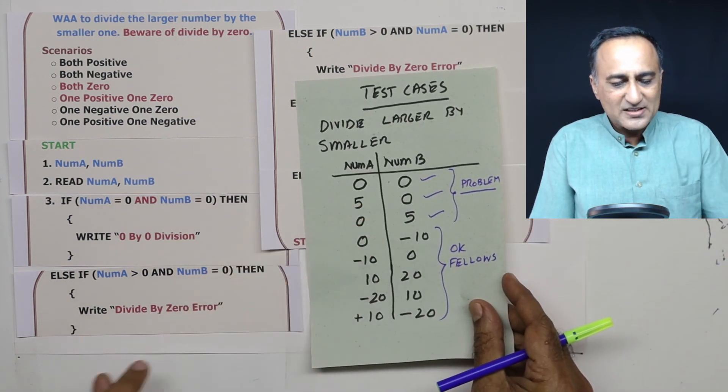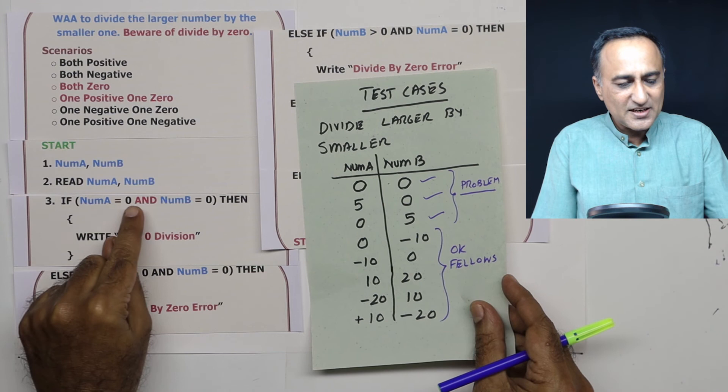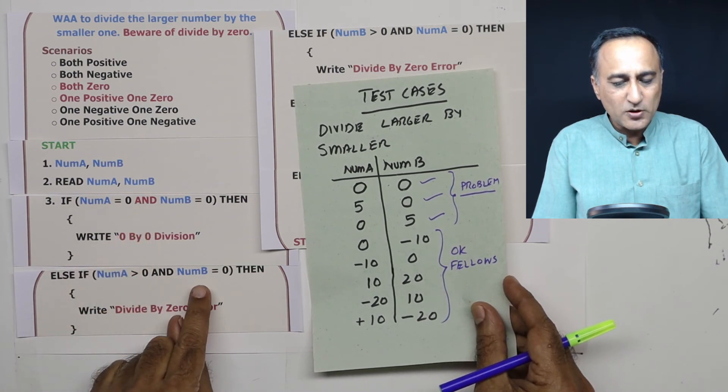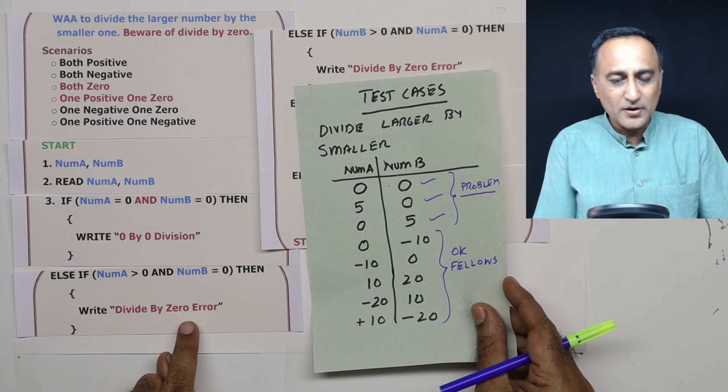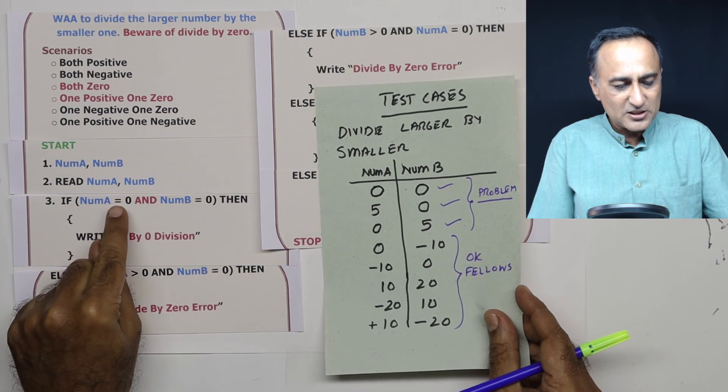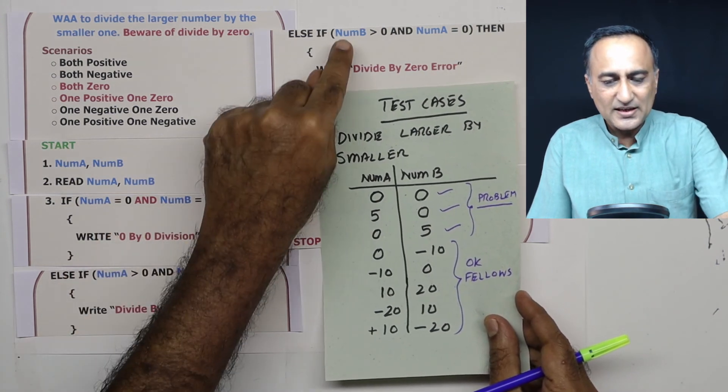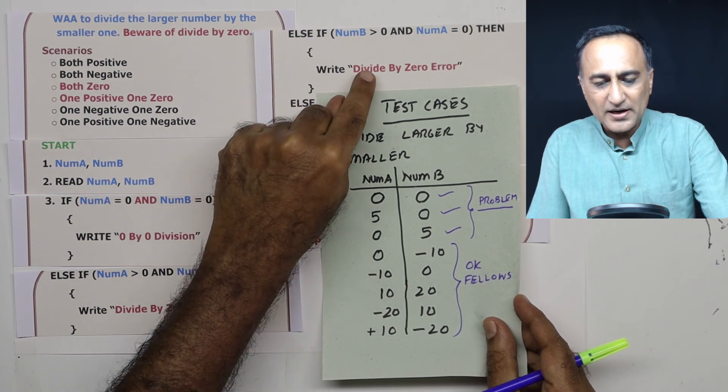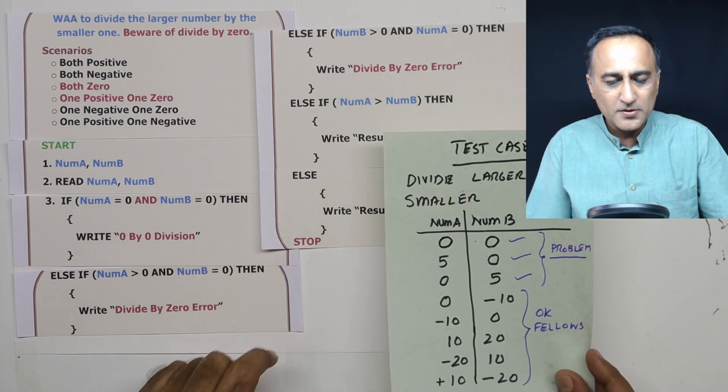Next is 5 and 0. This condition is false. A is greater than 0. B is equal to 0. So division by 0 error and stop. 0 and 5. This is false. This is false. Number B is 5 which is greater than 0. Number A is 0. So again divide by 0 error and I am going to stop.